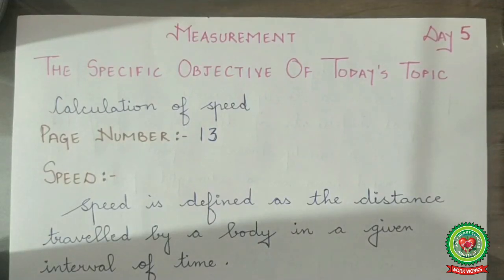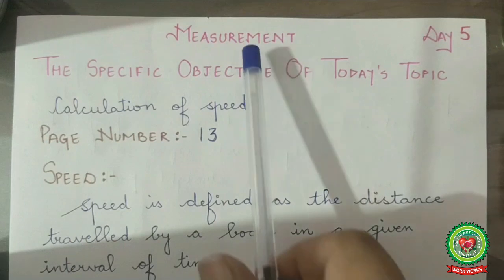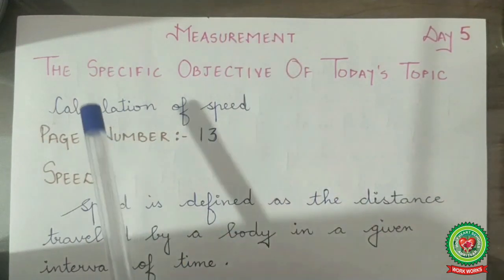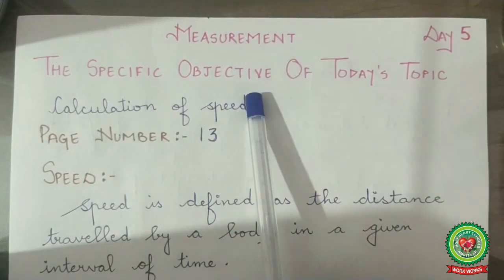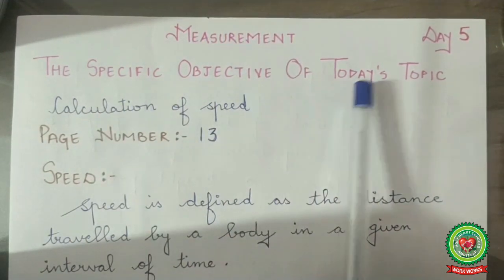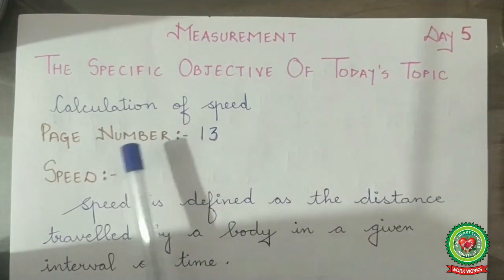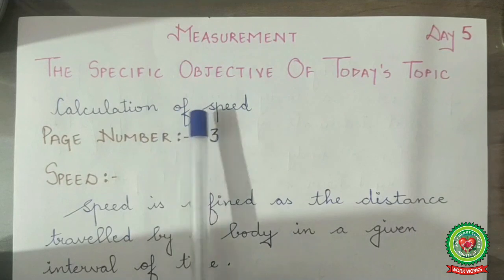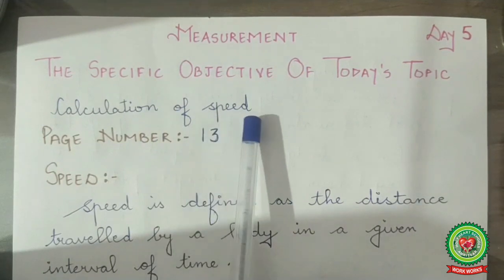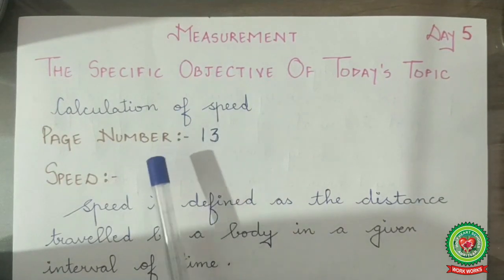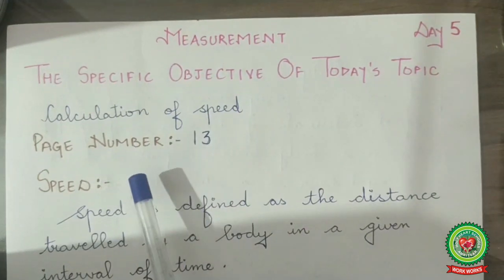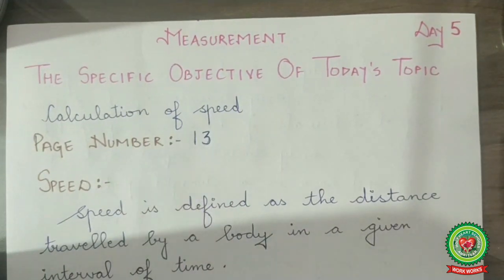Hello students, it's day 5 for chapter measurement. The specific objective of today's topic is calculation of speed. Open page number 13 of your textbooks.